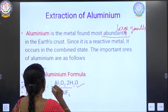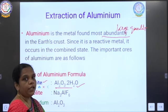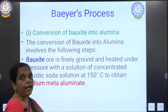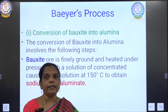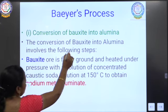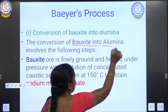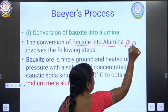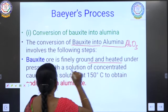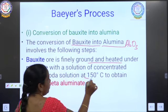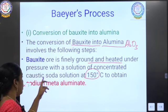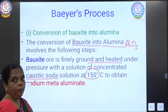We are going to use bauxite ore for the extraction of aluminium. Aluminium can be extracted by Bayer's process, which involves the conversion of the bauxite ore — that is alumina (Al₂O₃). The bauxite ore is finely ground and heated under pressure at a temperature of about 150°C in the presence of caustic soda, which is sodium hydroxide (NaOH).